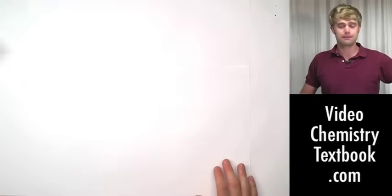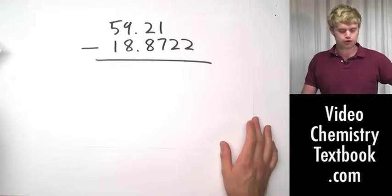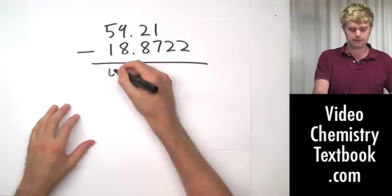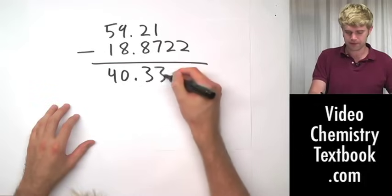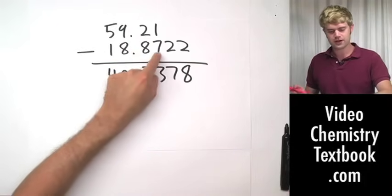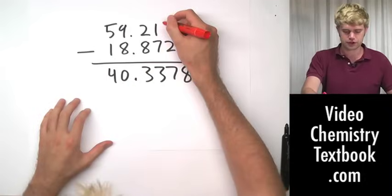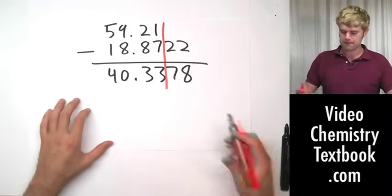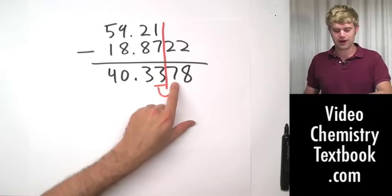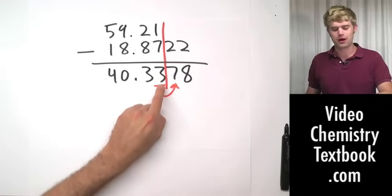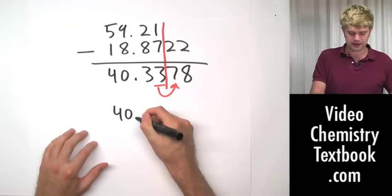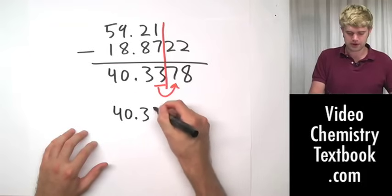Adding a whole bunch of numbers together follows the same rules. Subtraction also follows the same rules. When I do this subtraction problem, I get 40.3378. Two decimal places here, four decimal places here, that means my line goes just to the side. And three will be the last digit. Look to the right of it, to the seven. That means I'm going to round the three up to a four. So, the answer I'm going to get is going to be 40.34.